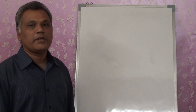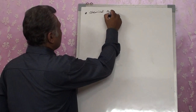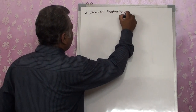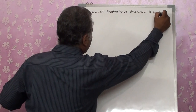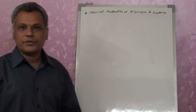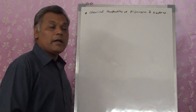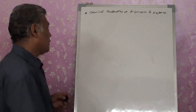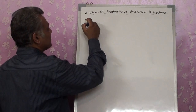Good morning students, welcome to the virtual classroom. We are studying the chapter of aldehydes and ketones and carboxylic acids. In our last lecture we discussed the nucleophilic addition reactions of aldehydes and ketones. Today we are going to study other chemical reactions, particularly related to reduction, oxidation, and alpha hydrogen reactions.